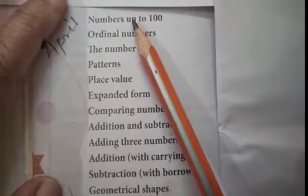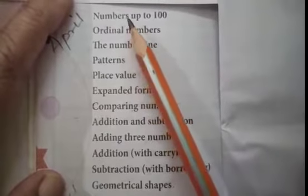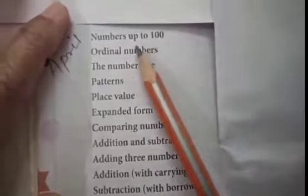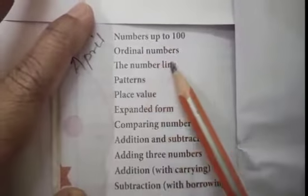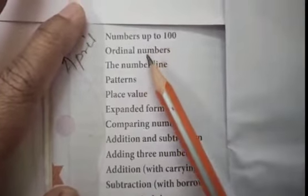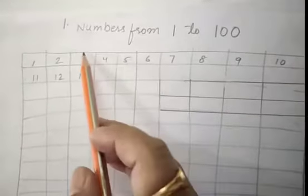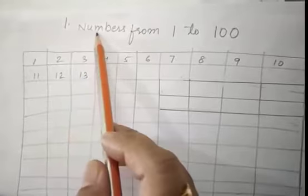Looking back is nothing but remembering the previous knowledge. So today we will complete these 3 topics. Numbers up to 100, ordinal numbers, number line. This is the first topic we are going to start.